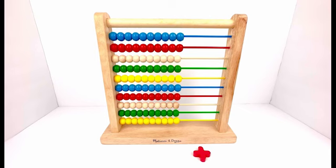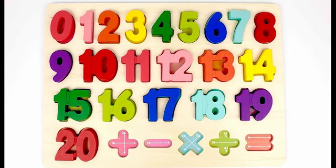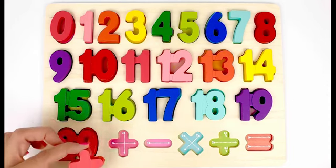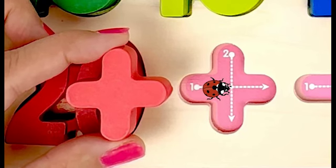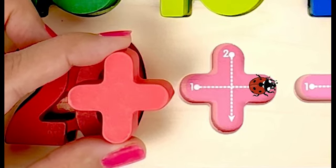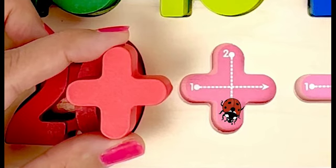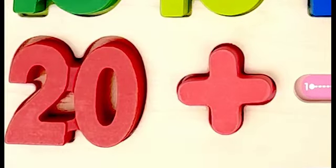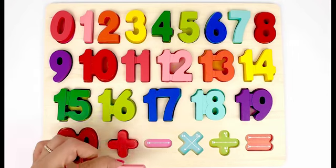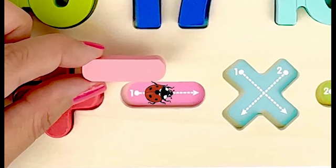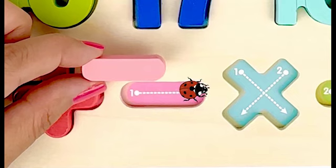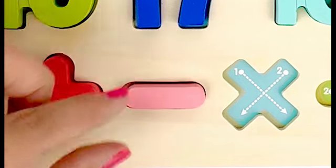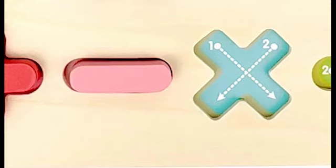The abacus is giving us all the missing pieces. Plus sign, minus sign, multiplication, division and equal. Let's trace plus sign. Let's trace minus sign.